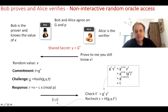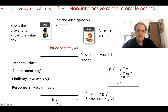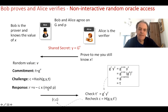Bob is now challenged with this hash to create a response. The response r = v - c·x mod p, where x is the value secret to him and p is the prime number.